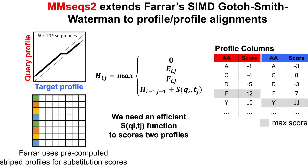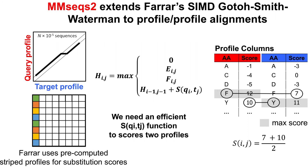MMSeqs2 uses Farrar's SIMD implementation for the gapped Smith-Waterman alignment, which was not intended for profile-profile use, so we devised our own scoring function S that takes two profile columns and combines them into one score. The idea is to take the maximum column — for example, F — look up the F score in the second column, and do the same vice versa, ending up with two values that you average for the profile-profile score. This simple formula can be implemented very efficiently in SIMD and also improves performance.